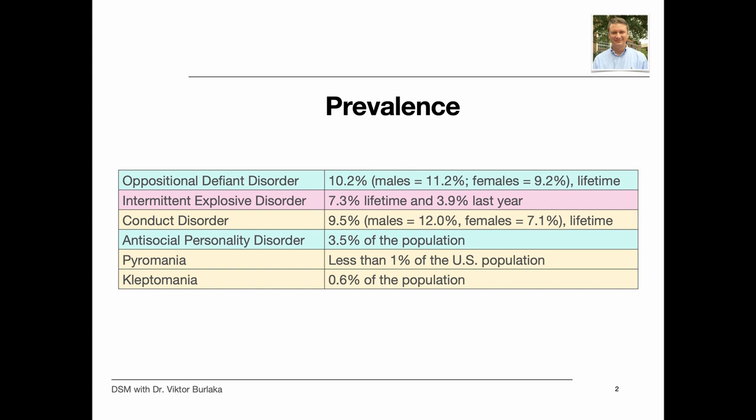How common are these disorders? The most prevalent of these disorders is oppositional defiant disorder. About 10% of the population experience ODD during their lifetime. Kleptomania, on the other hand, is very rare and accounts for less than 1% of the population.